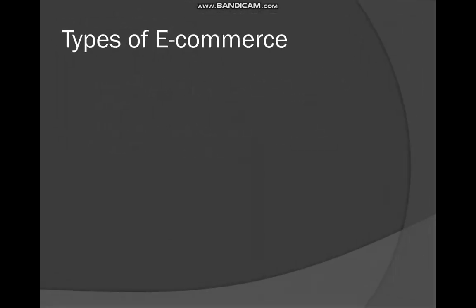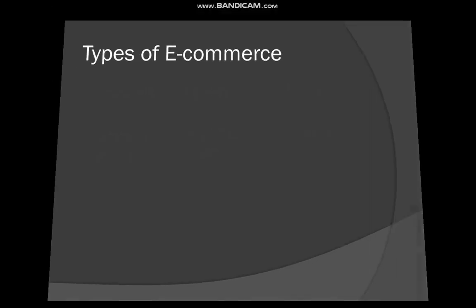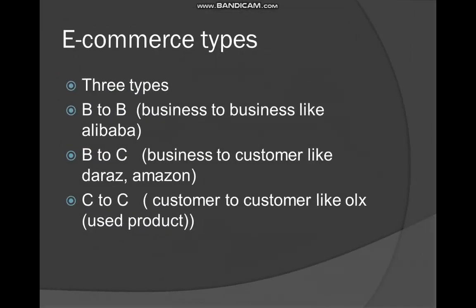Types of e-commerce. There are three types. Number one: B2B — B2B is Business to Business. You can find an example in Alibaba, which is used for wholesale buying. This is B2B.